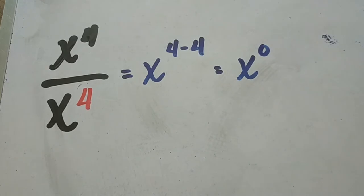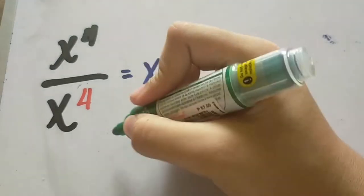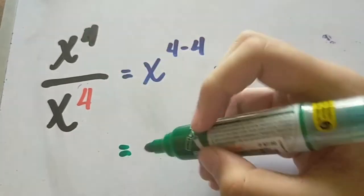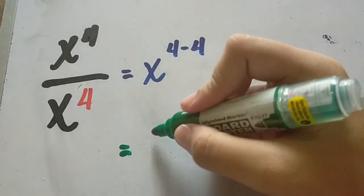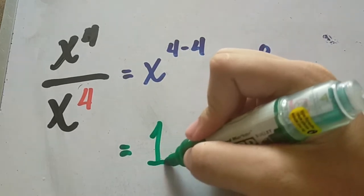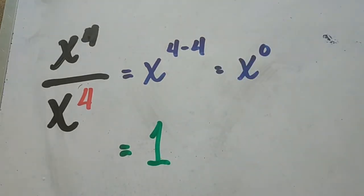So this will only happen if and only if you divide a number by itself. Now going back to basic division, if you're going to divide a number by itself, x raised to 4 divided by x raised to 4, the answer will always be equal to 1. If a number is divided by itself, the answer is always 1.